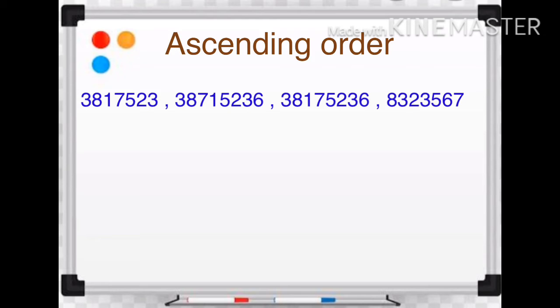Matlab, yeh jo chaar numbers hai, us mein sabhi numbers mein kitne digits hai, wo pehle hume count karne hoonge. So, first and last numbers are seven digits. Middle numbers are eight digits.